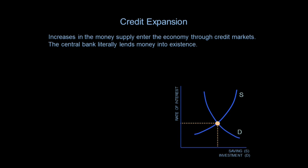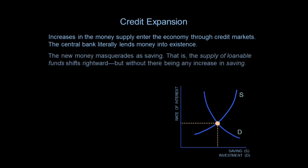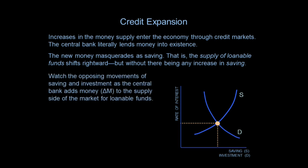Now we get to the credit expansion. Instead of savings, you have an increase in the money supply, and new money comes through credit markets. So it shifts the supply of credit without increasing saving — in fact it decreases saving. Money masquerades as saving. The supply of loanable funds shifts to the right, but without there being any increase in saving. Watch the opposing movements of saving and investment as the central bank adds to the money supply — that's delta M. This is a totally different sort of story because it involves a central banker, a policy maker, thinking that interest rates ought to be lower.